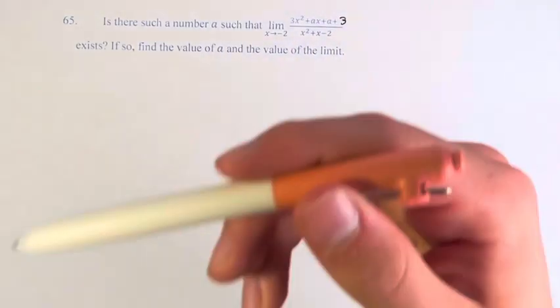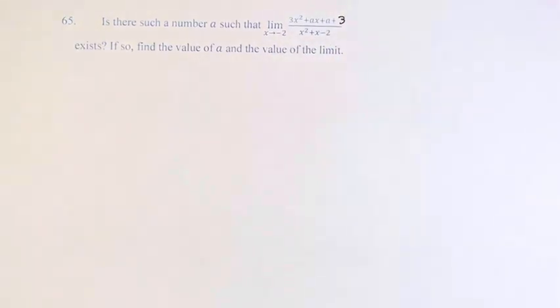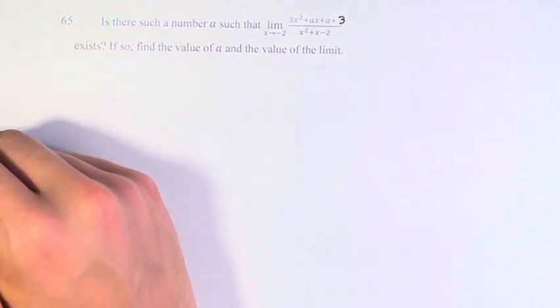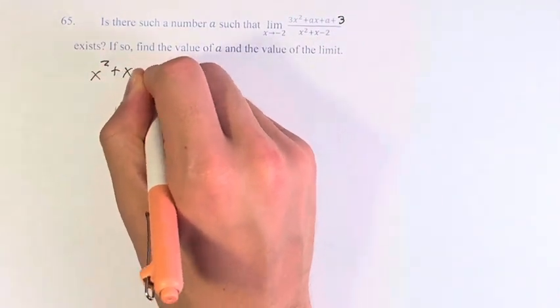exists? And if so, find the value of a and the value of the limit. So the issue here is that if we look at this limit, we have a denominator here. We have x squared plus x minus 2.